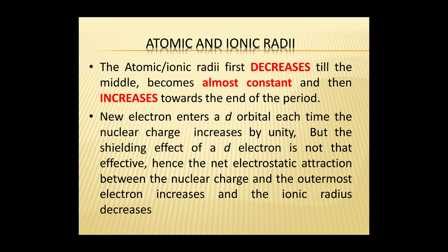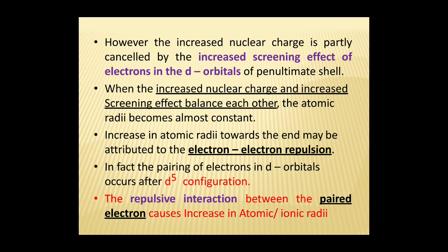As a result of the increasing nuclear charge not being fully offset, the net electrostatic attraction between the nuclear charge and the outermost electrons increases and the ionic radii decrease. The shielding effect occurs when the outermost electron is quite far from the nucleus, and the nucleus is not able to exert its full attraction on it because inner S orbital electrons repel the outermost electron. However, the increased nuclear charge is partially cancelled by the increased screening effect of electrons in the D orbitals of the penultimate shell.